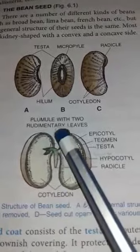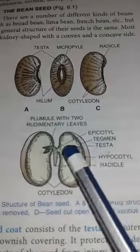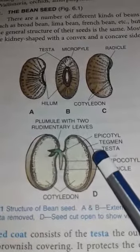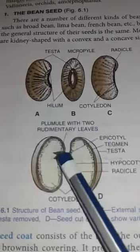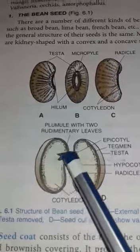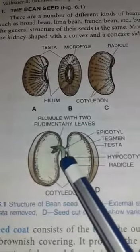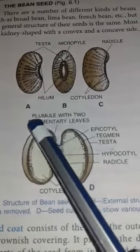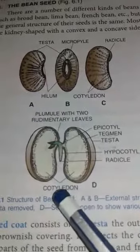The outer layer is the testa and the innermost layer is the tegmen, but in some seeds both testa and tegmen are fused together. Next is the embryonal axis. The upper portion up to the plumule is known as the epicotyl, the middle portion where the embryonal axis lies is called the mesocotyl, and the lower part below the embryonal axis down to the radicle is called the hypocotyl. The upper part gives rise to the plumule, which rises above the soil, and the lower part gives rise to the root system called the radicle.